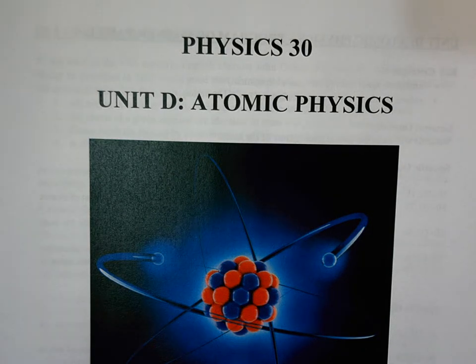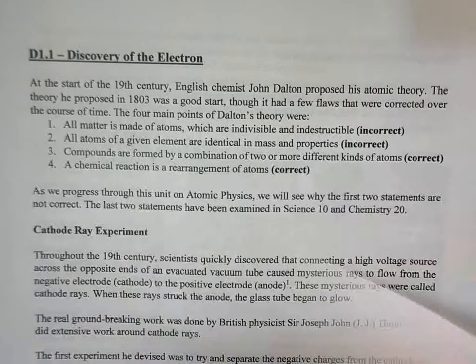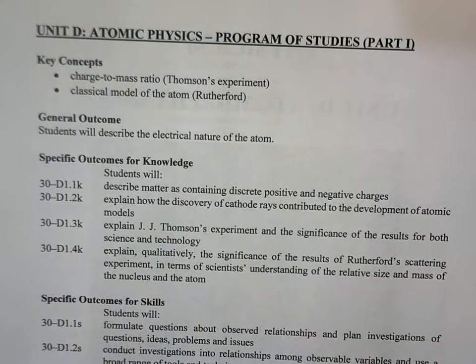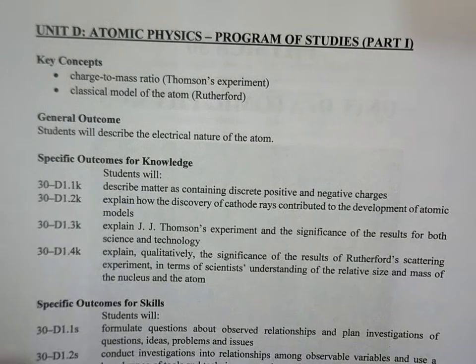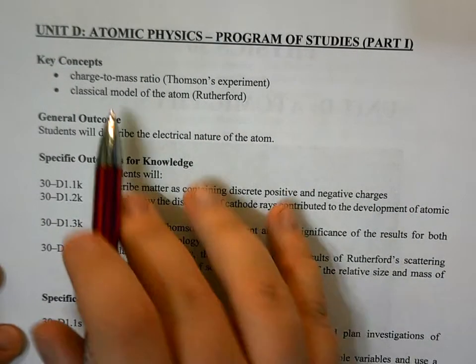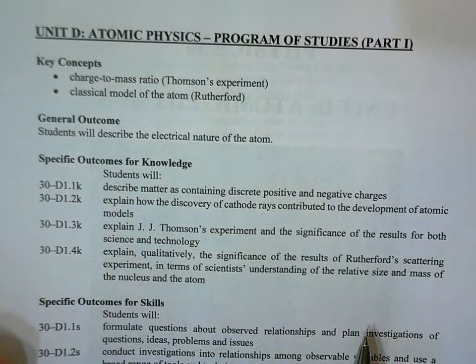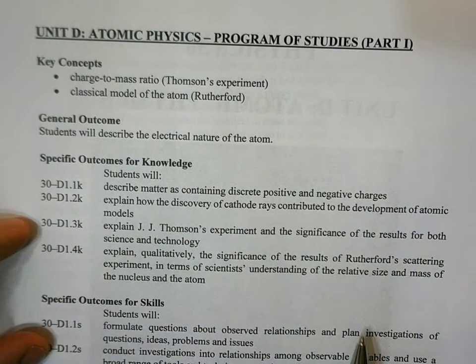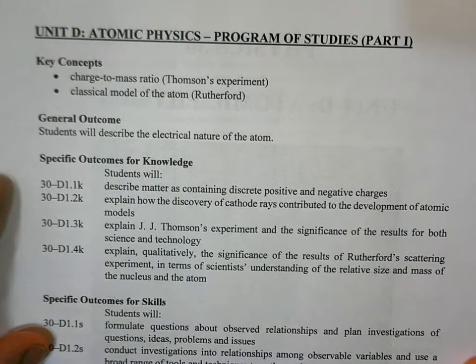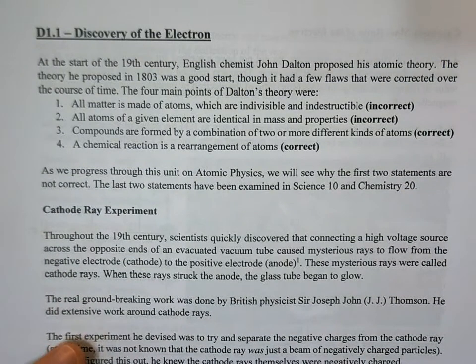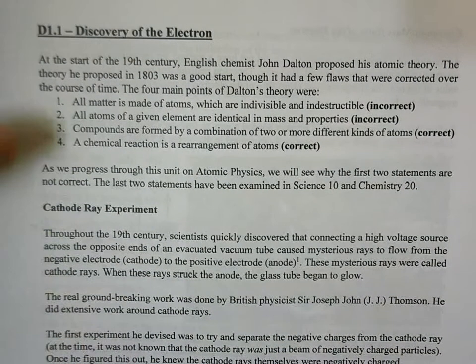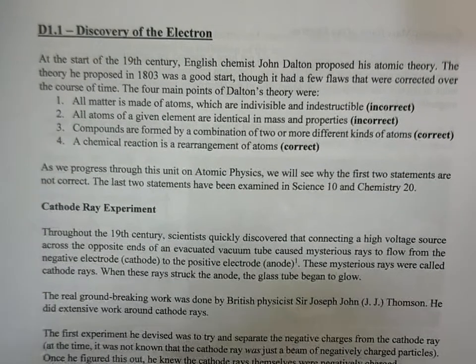It's time to start the final unit of physics 30 — atomic physics. We're going to break this unit up into four parts. The first part covers the charge-to-mass ratio along with Thomson's experiment, and we'll also talk about the Rutherford model of the atom.